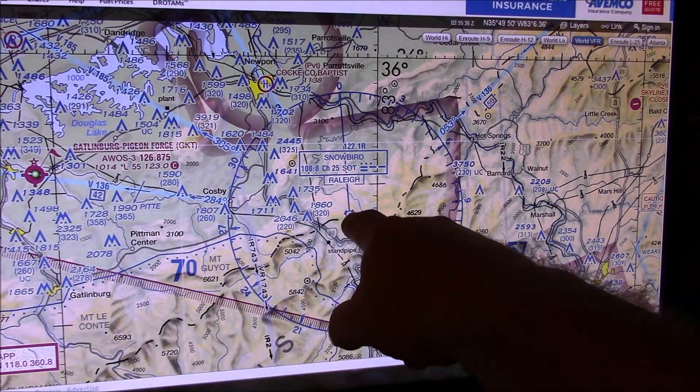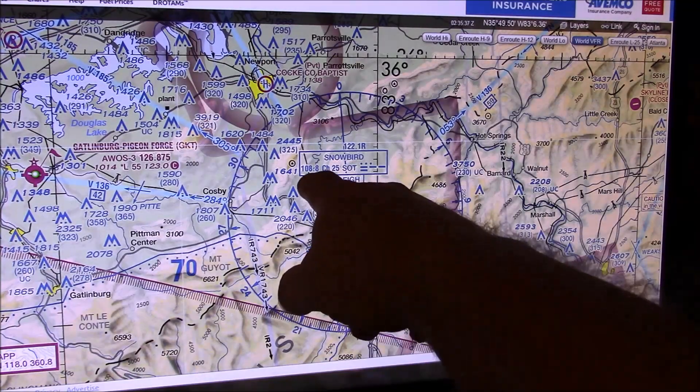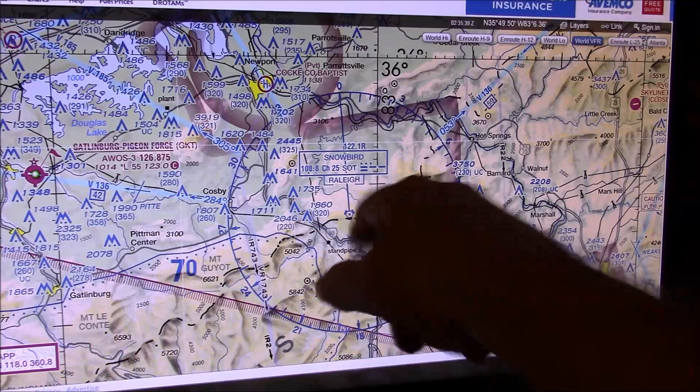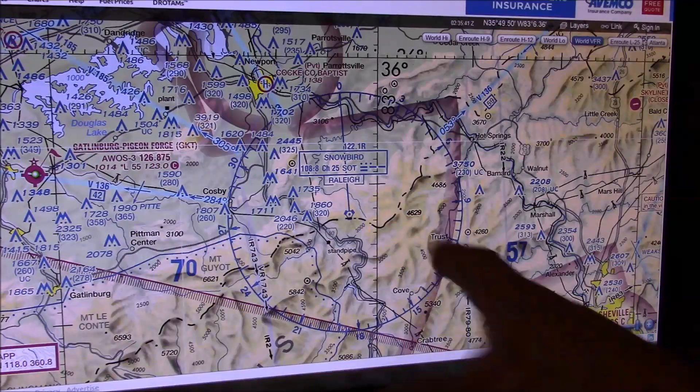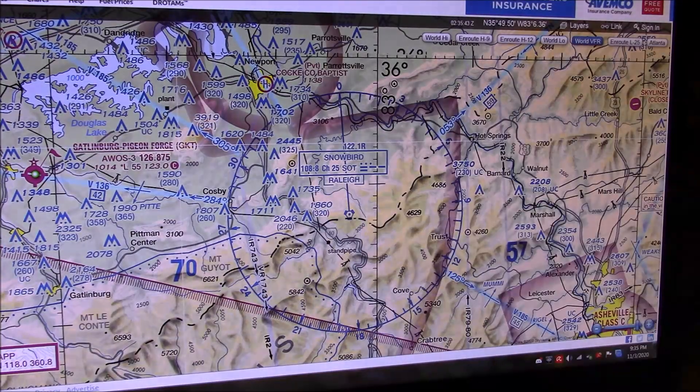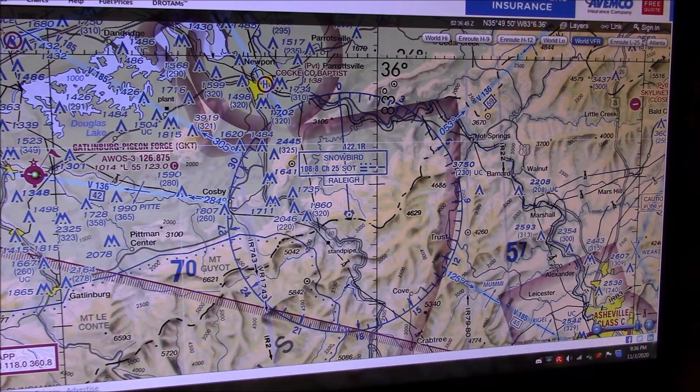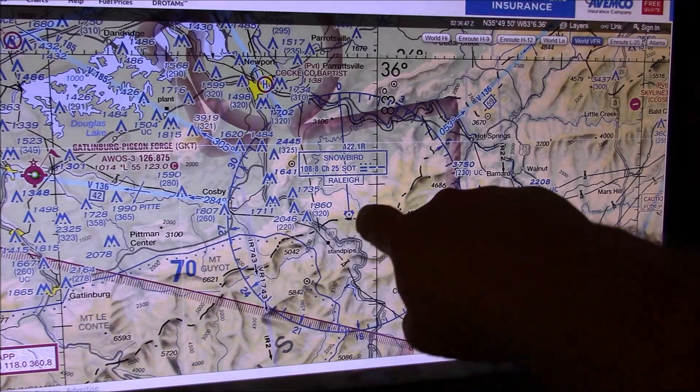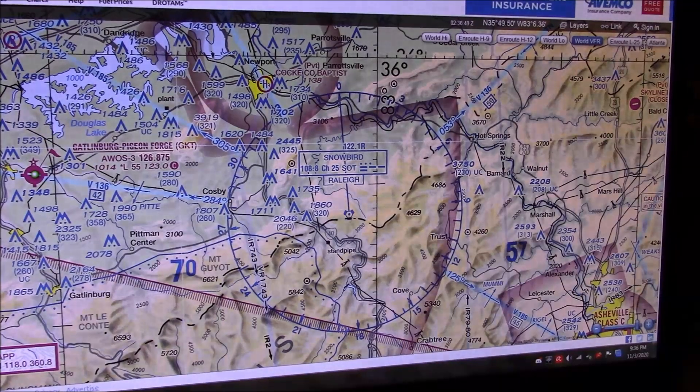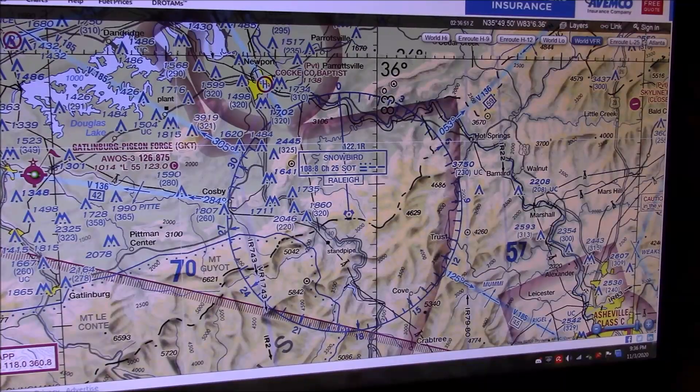You can see the location of our VORTAC, the name of it, frequency, call sign, call sign in Morse code, and the circle that represents our radials. If we were headed towards our VORTAC, we would be on a bearing, represented by T. And if we were going away from it, we would be on a radial, represented by F.